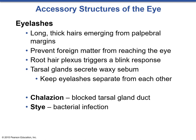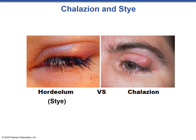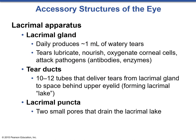Here we can see the difference between a stye and a chalazion. Now we get to move into the actual lacrimal apparatus. These are what produce tears. The lacrimal apparatus consists of the gland itself, which is in the upper right portion of the orbital margin, and produces approximately one milliliter of watery tears per day. Tears are actually very important — they lubricate, nourish, and oxygenate the corneal cells since these cells have no blood vessels. They also help to attack pathogens and keep the eye clean, with different antibodies and enzymes present in the tears.